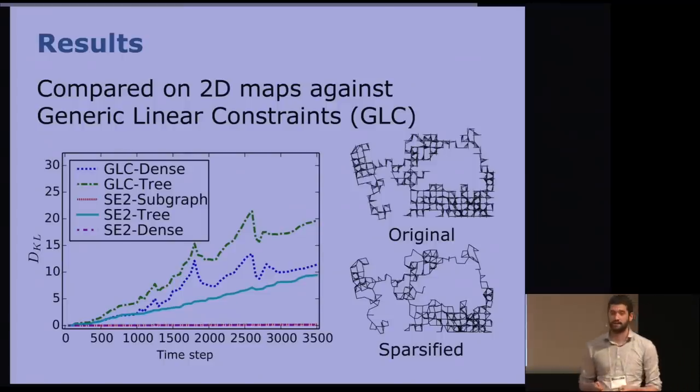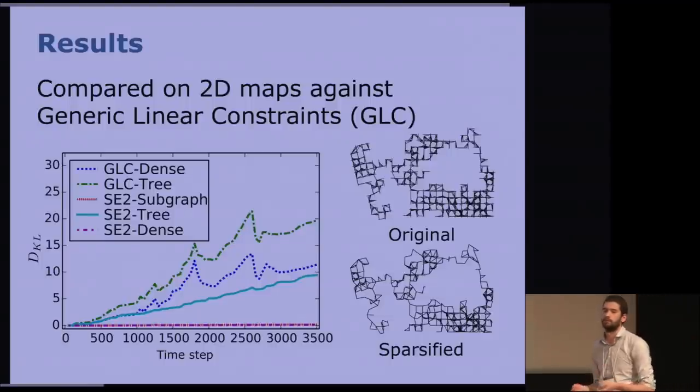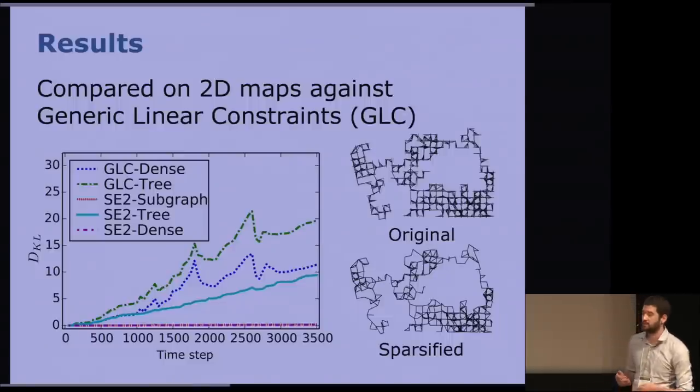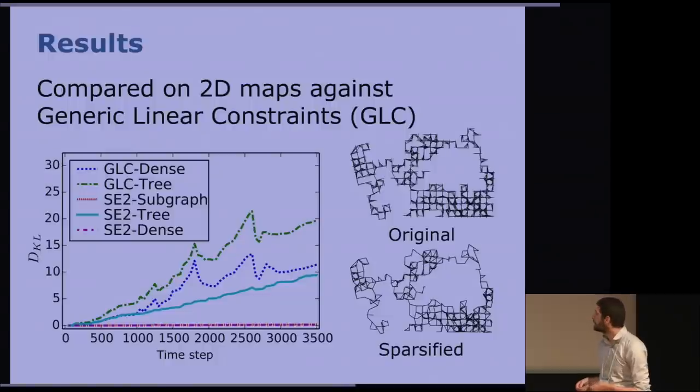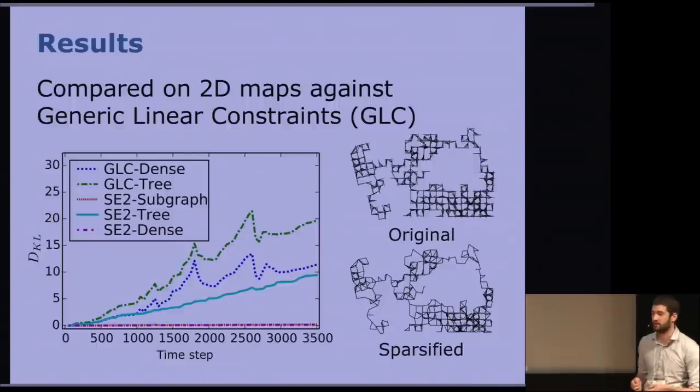So, we evaluated our approach against that of Carlevaris-Bianco and Eustice, which is generic linear constraints, onto the maps. We considered three particular scenarios of testing. One is the full incremental one, where we remove nodes as soon as they arrive into the graph. The other one is periodic batch sparsification, where we remove nodes once every 100 iterations. And finally, a global sparsification. We achieved better results in incremental and periodic batch sparsification, particularly in the incremental scenario. For example, here you can see the results in terms of Kullback-Leibler divergence for an incremental version of the Manhattan dataset.